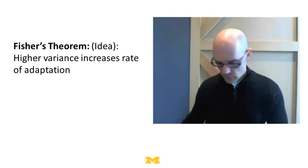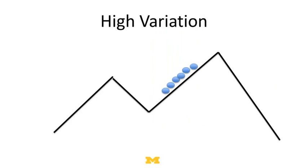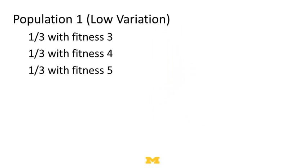Here's Fisher's theorem: higher variances — if you've got more variation — mean you should be able to adapt faster, to climb the landscape faster. If there's low variation and you apply selective pressure, you can only climb up a little bit. But if there's high variation, you can climb a lot faster. The more variation, the more people you've got to copy, the more likely there is to be someone good, and the better you're going to do. Let's do an example to see why this is the case.